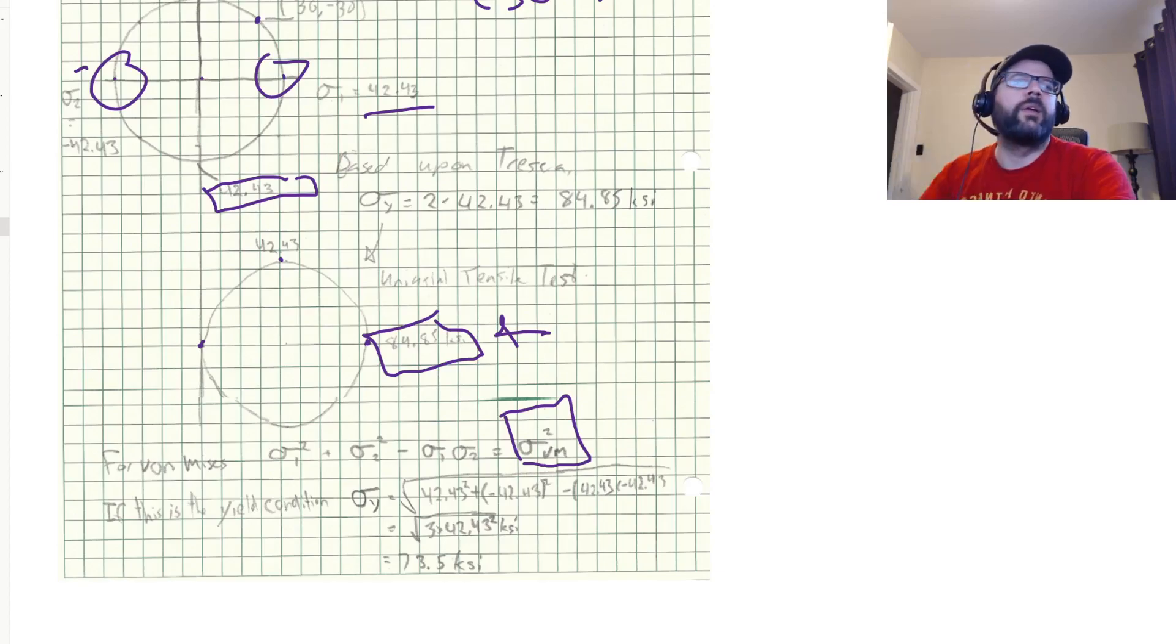All that squared. So if we assume that we want the Von Mises stress at this state to be what we use to find our yield strength, we just have to take the square root of this. So sigma 1 is 42.43, so 42.43 plus negative 42.43 squared, which gets rid of the negative, minus 42.43 times minus 42.43, which gets rid of that negative.